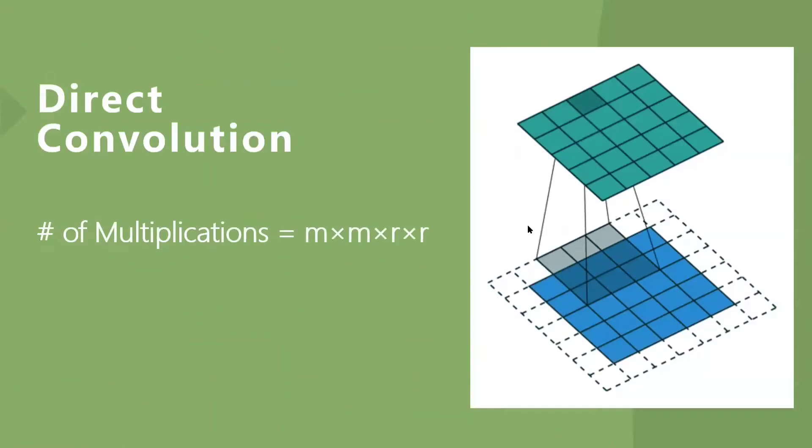The first one is direct convolution. As shown in the animation, the blue squares represent the input matrix, the dotted squares represent the padding, the gray squares represent the convolution kernel, and the green squares represent the output. The convolution kernel moves on the padded input, and the overlapping part is called a window or a receptive field. An element of the output matrix can be obtained by accumulating the value obtained after element-wise multiplication on the value of the window.